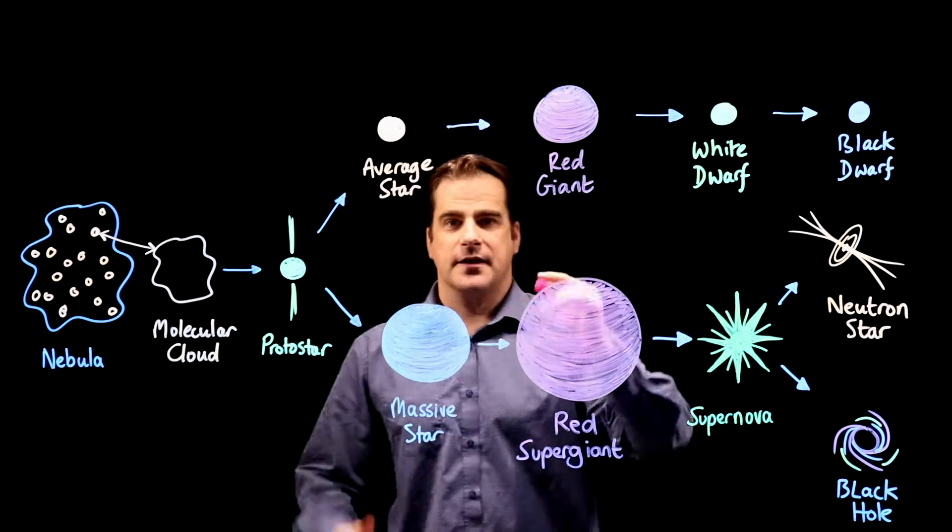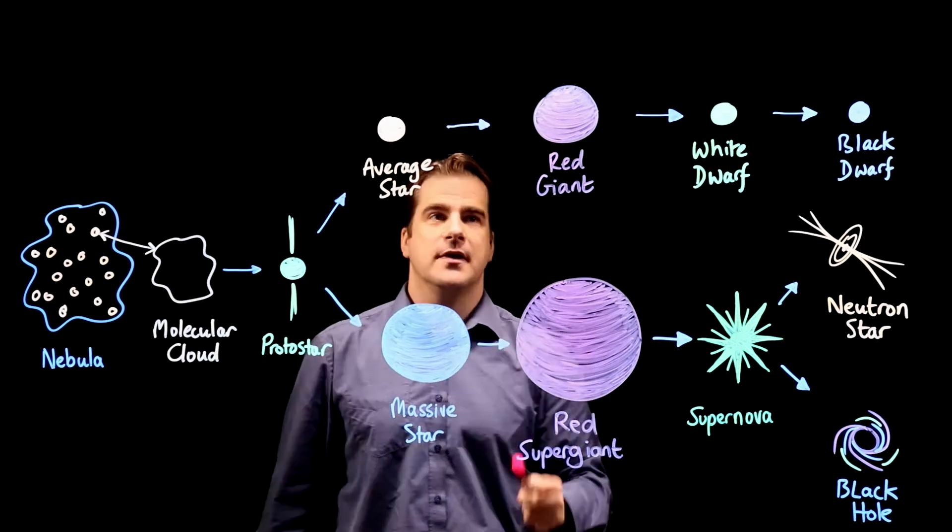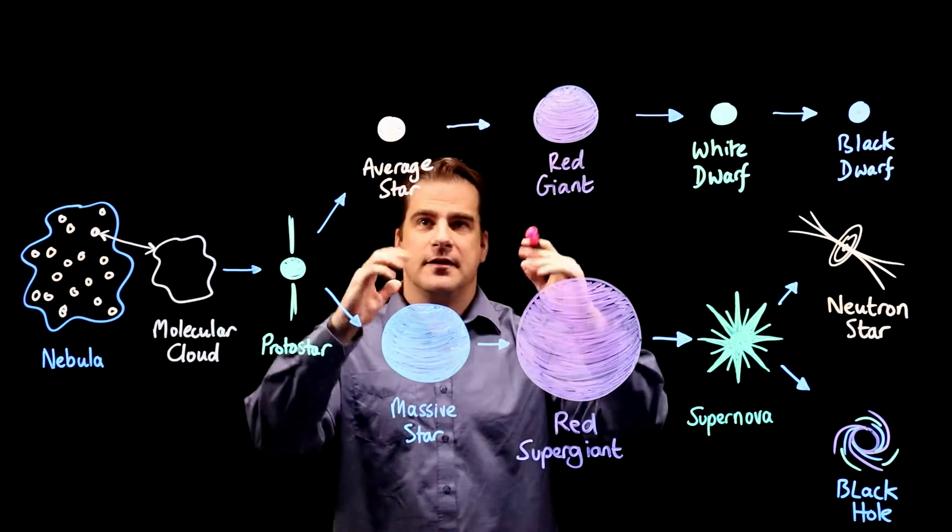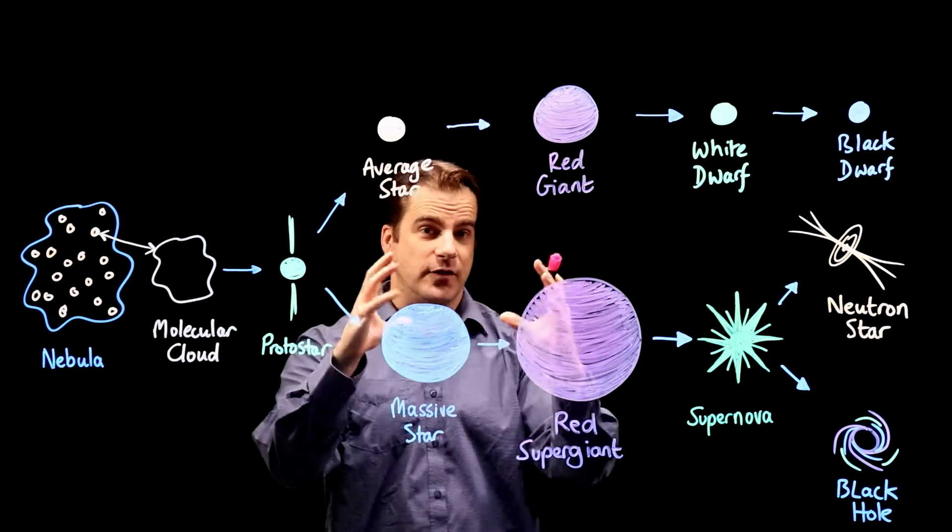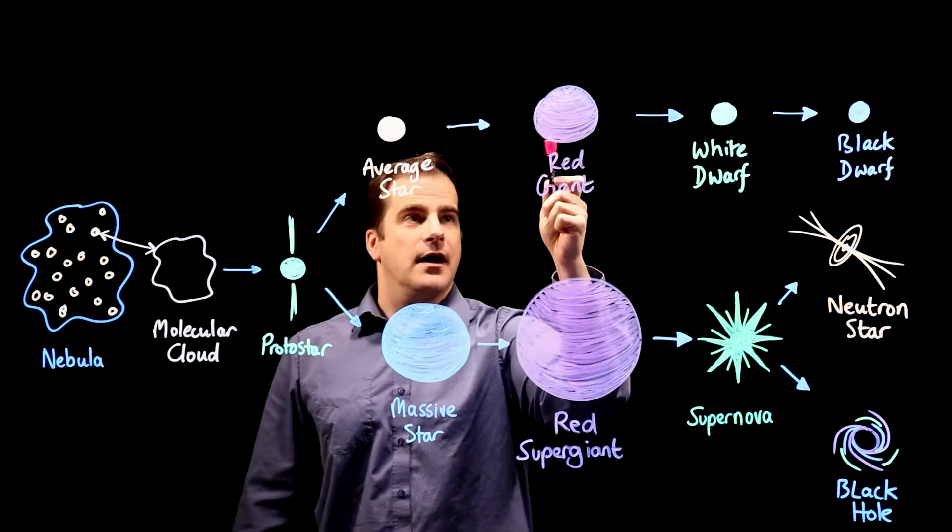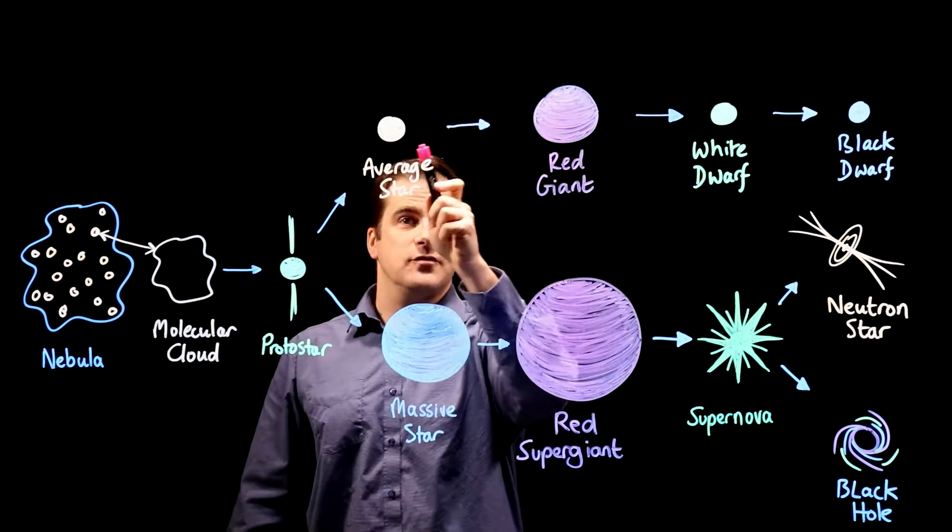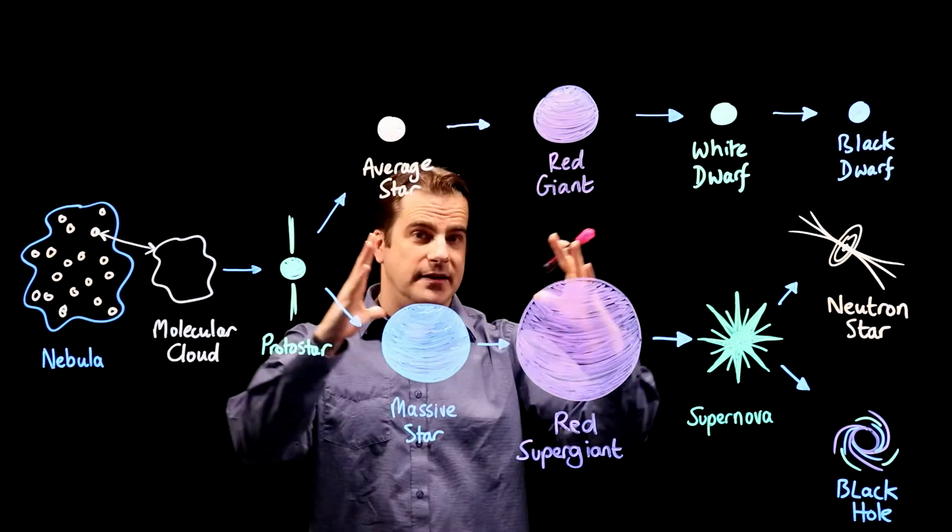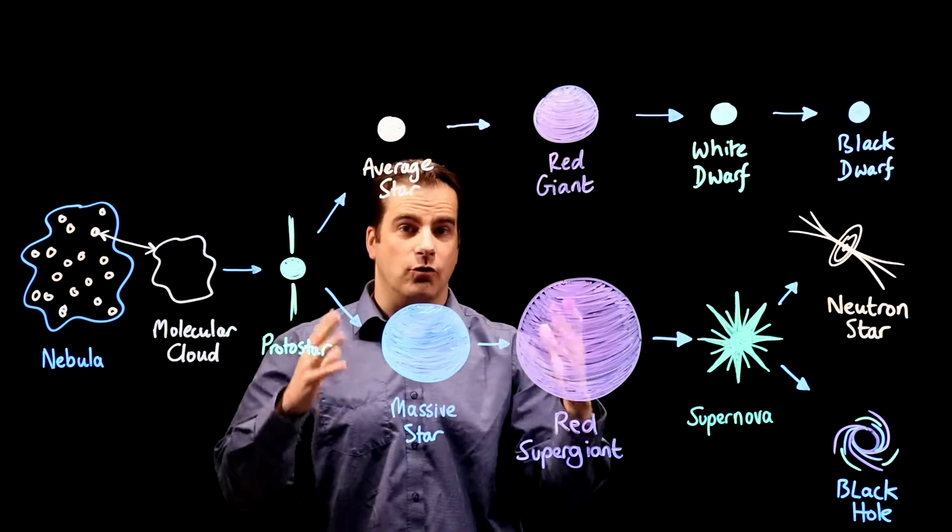But eventually that hydrogen runs out and at that point the helium starts to fuse together to form carbon and oxygen. And this is when the star expands into a so-called red giant.